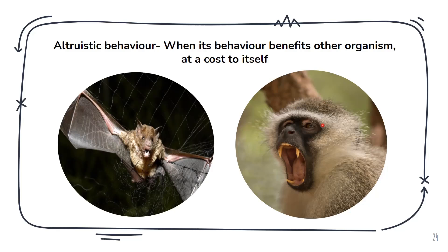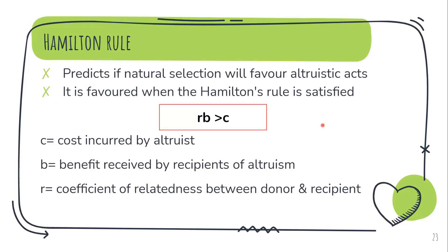This is an altruistic behavior — it has some disadvantage to itself, but that disadvantage translates into an advantage for the other organism. Now let us understand the Hamilton rule.